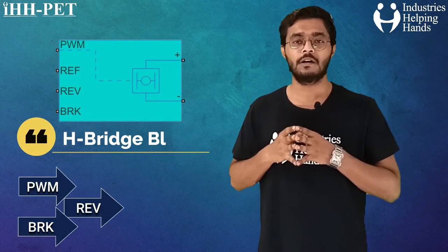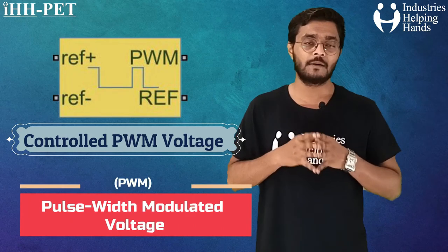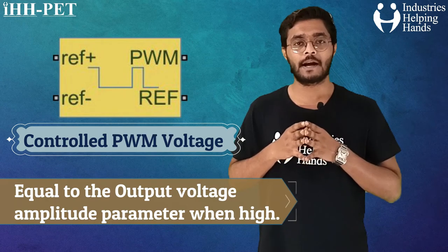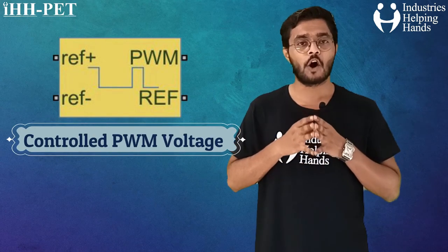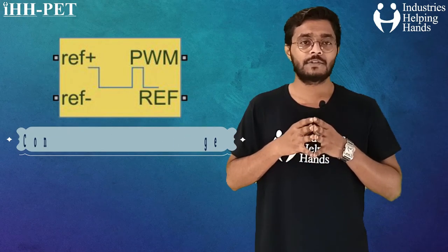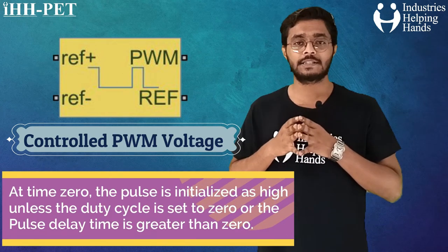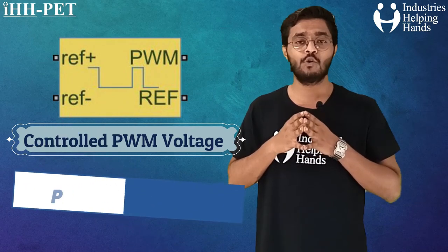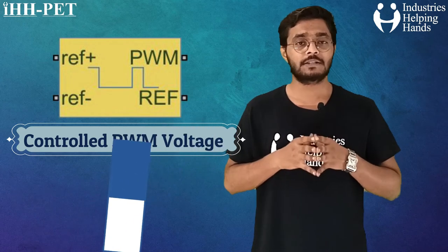The controlled PWM voltage block creates a pulse-width-modulated voltage across the PWM and reference ports. The output voltage is zero when the pulse is low and equals the output voltage amplitude parameter when high. Duty cycle is set by the input value. Right-clicking the block and selecting Simscape gives block choices to switch between electrical reference ports and physical signal input U. The simulation mode can be set to PWM or averaged — in PWM mode the output is a PWM signal, and in averaged mode the output is constant and equal to the averaged PWM signal.